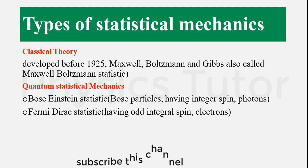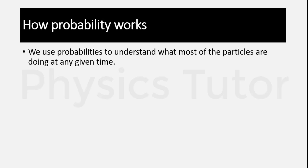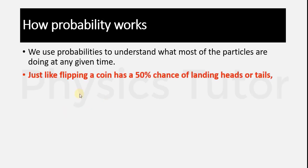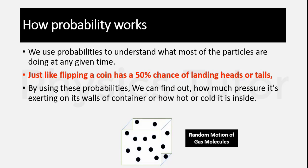Statistical mechanics is based on probability. To understand how probability works, we take the example of a coin. If we flip a coin, there is a 50% chance of landing heads or tails — two probabilities. In the same way, probability tells us about a container having a large number of molecules, and what happens to the particles when pressure or temperature is increased or decreased.